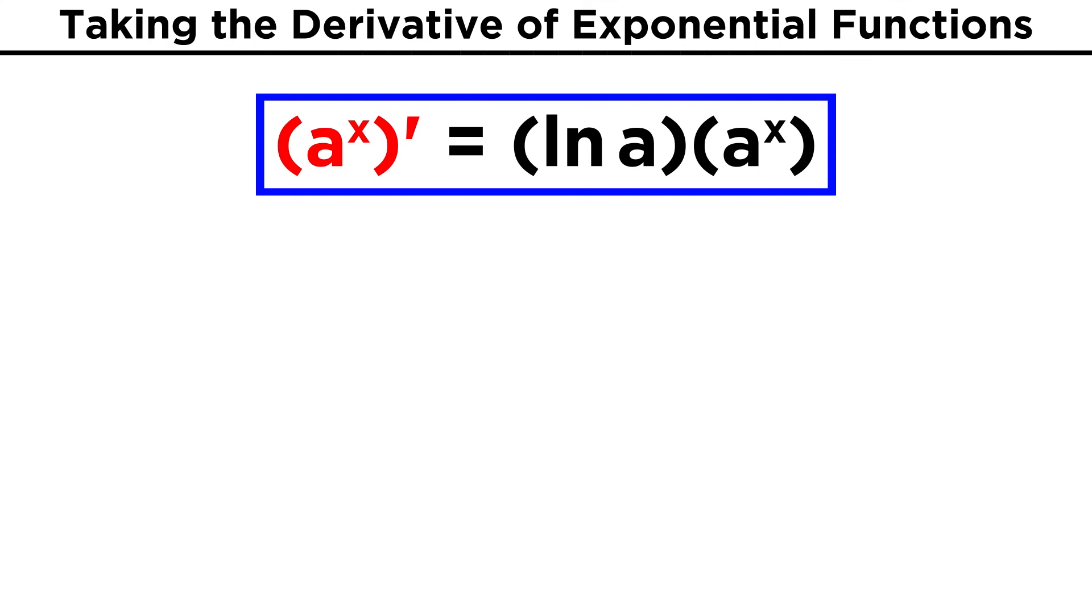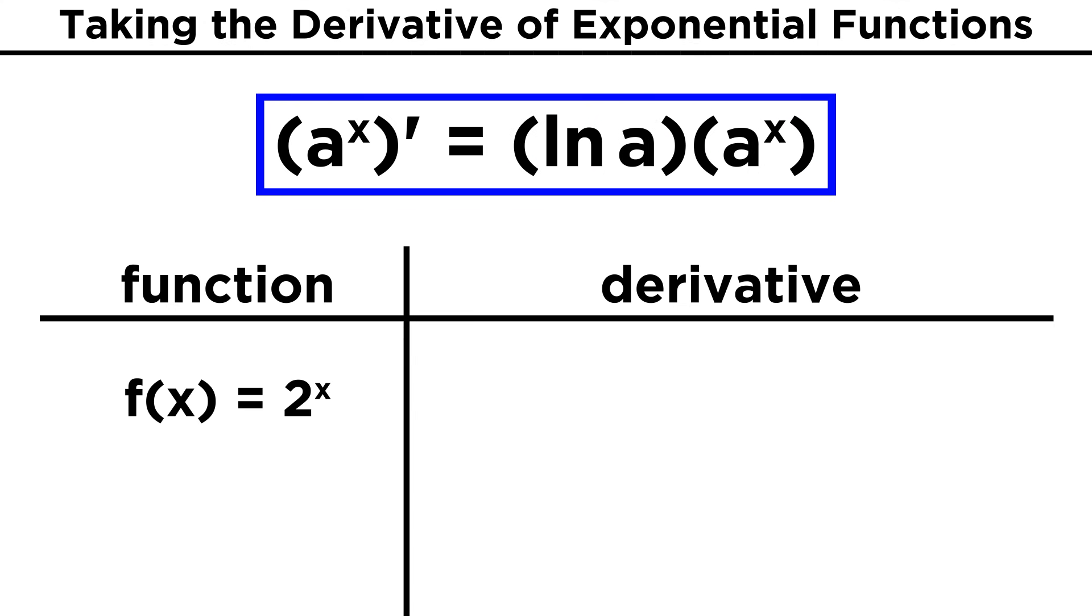Well the rule is that the derivative of some exponential function, A to the X, with base A, will be equal to the natural log of A times A to the X. So in the case of two to the X, we get natural log of two times two to the X.